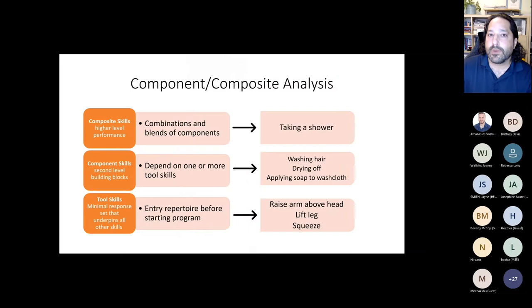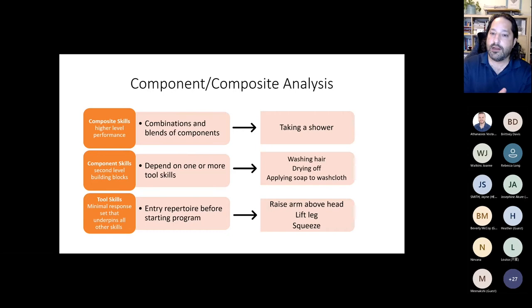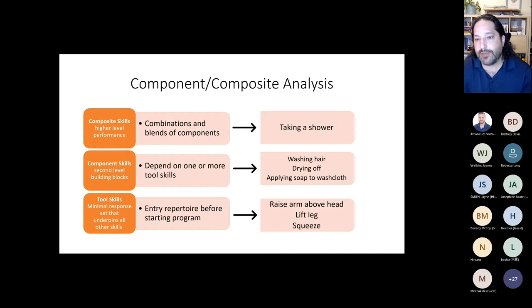Component-composite analysis: if we look at a composite skill like taking a shower, it's based on a bunch of different components. The component skills include washing our hair, drying off, applying soap to a washcloth. But what do we need to be able to do to make those components possible? Those are called tool skills — we need to be able to raise our arm over our head, lift our leg, squeeze. This is the world we're going to live in during this presentation.